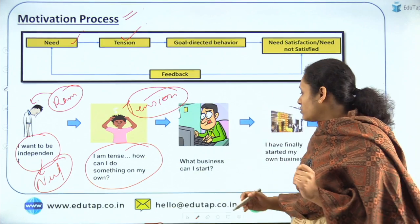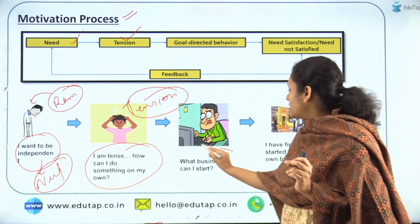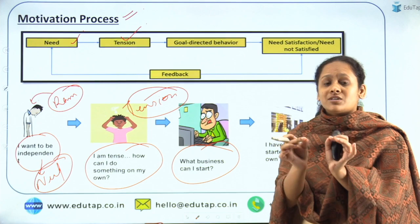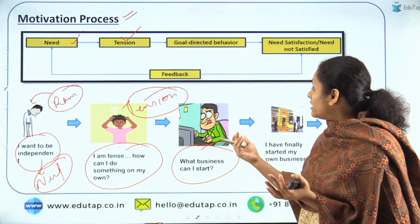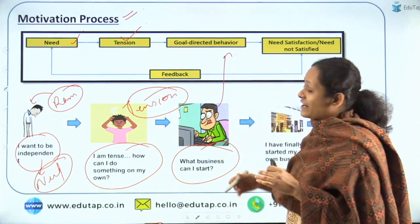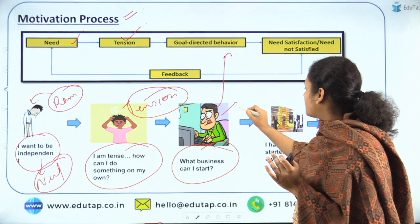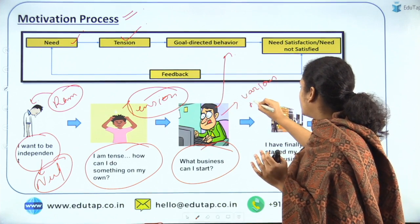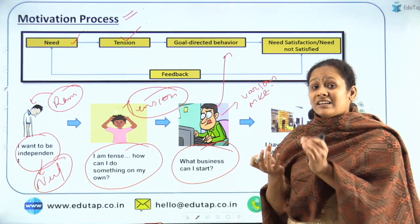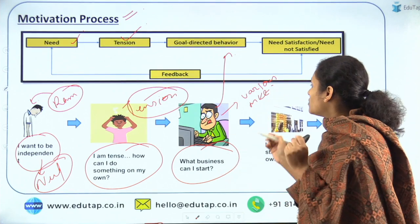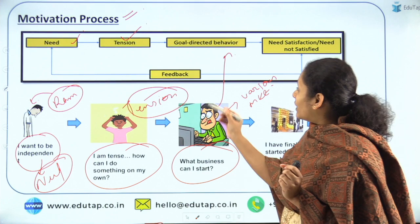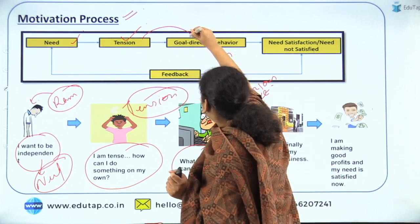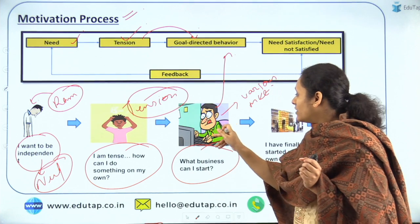After successfully finding what he wants to do, he decides that he wants to start a business of his own. Once he knows that, he takes goal-directed behavior — he starts researching the market scenario and the various technologies he can use. Once he overcomes the tension process, he moves towards goal-directed behavior, working hard.